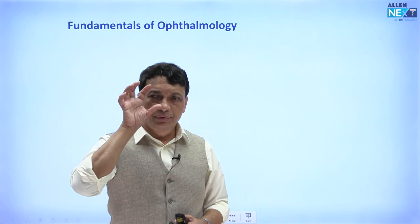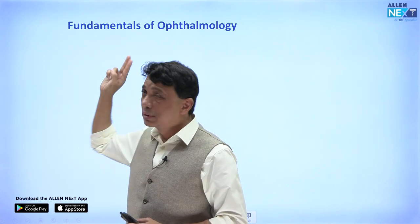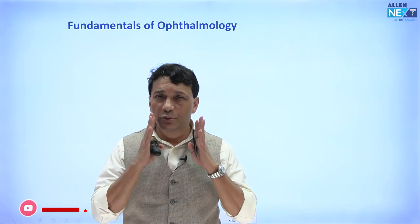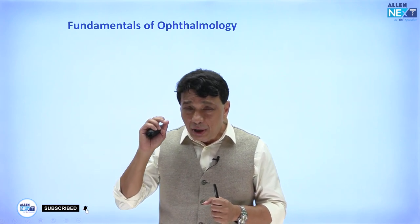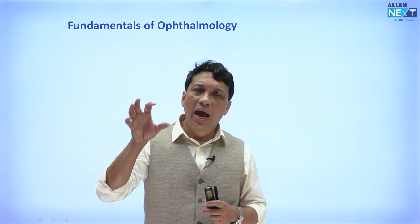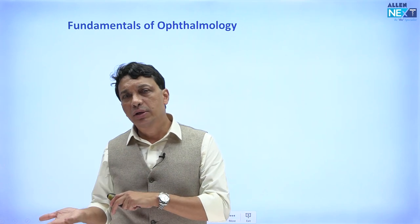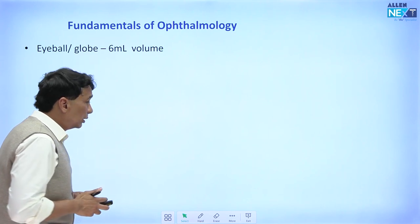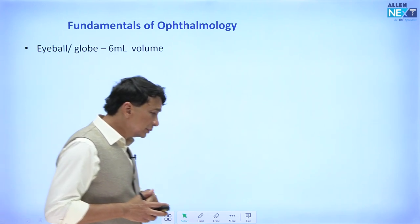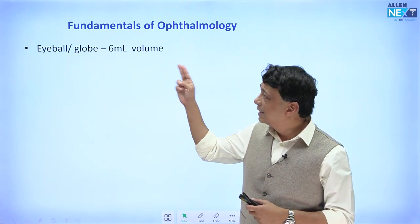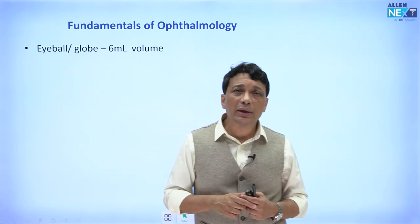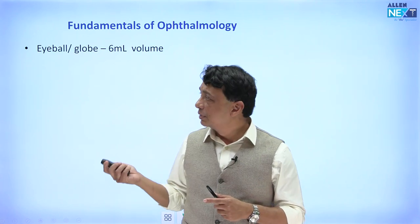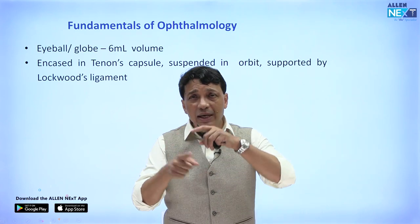We are going to discuss the fundamentals of the eyeball. We've already covered the orbit, and now it's time to talk about the eyeball per se — the anatomy, physiology, biochemistry, pathology, and microbiology required for ophthalmology. The globe occupies 6 ml; remember the orbit is 30 ml, so the eyeball occupies only 30 percent of the orbit.